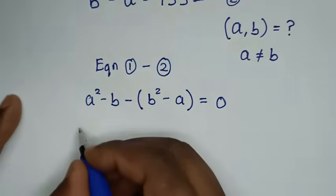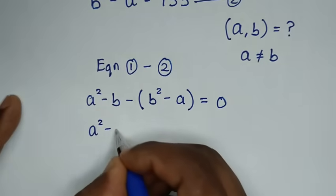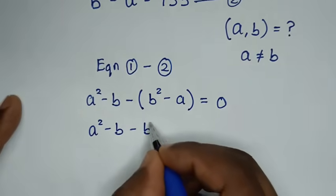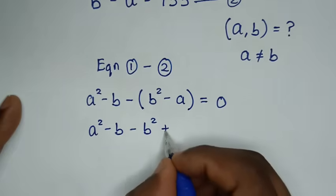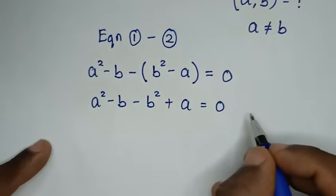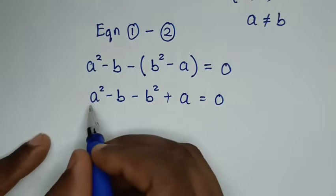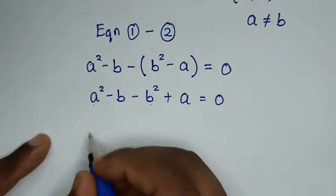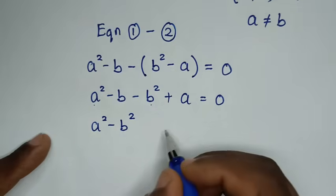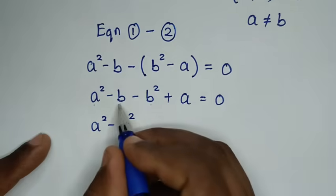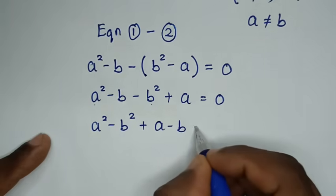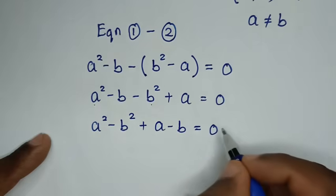Expanding, it will be a squared minus b, then opening the bracket by the negative sign gives minus b squared, plus a, equals 0. Rearranging, this becomes a squared minus b squared, plus a minus b, equals 0.